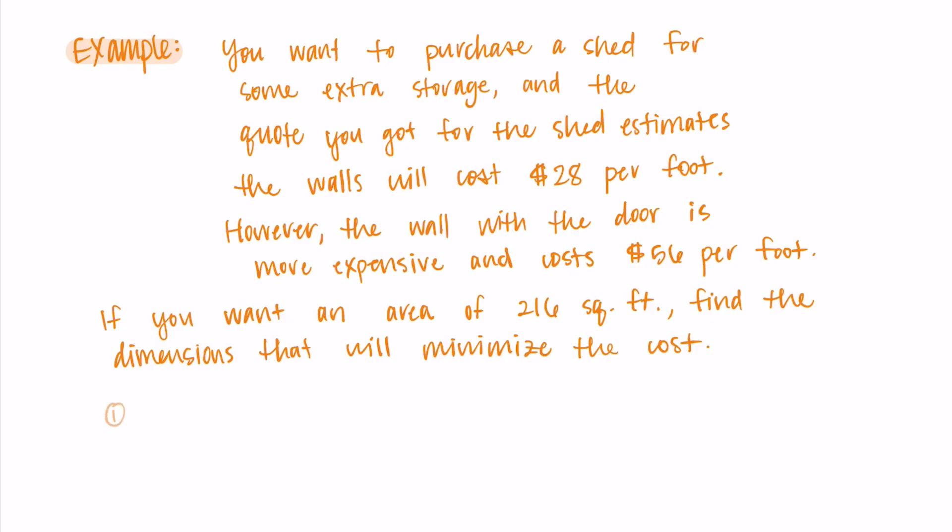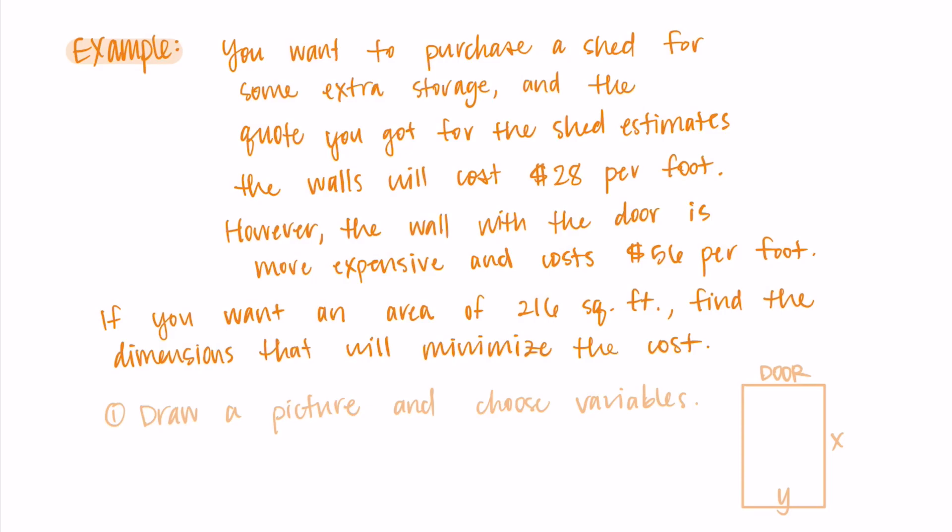So we're going to follow those same steps that we do anytime we're doing optimization. Our first step is always to draw a picture and choose some variables. So I'll draw a rectangle for my shed here. I don't necessarily know if x is the longer length and y is the shorter one, but I will just label them anyway. And let's also put the door on the top part of the shed. So y is the length of the side that also has the door.